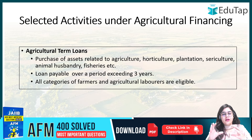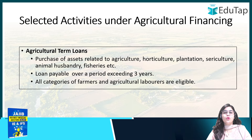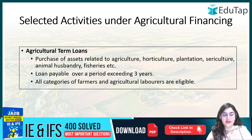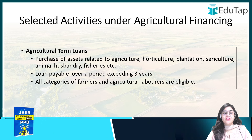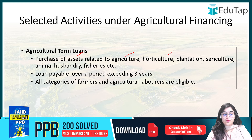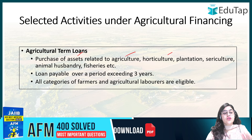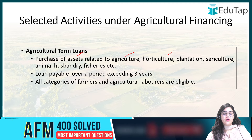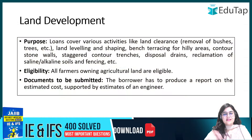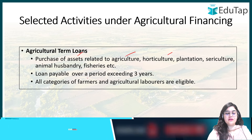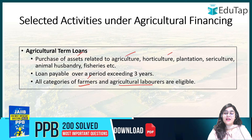Which activities are those that farmers do in agriculture, which can give them loans from banks or financial institutions? Agricultural term loans can be obtained if you have to purchase any assets for agriculture, horticulture, plantations, sericulture, animal husbandry, or fisheries. These term loans are normally repaid over a period exceeding 3 years. All categories of farmers and agricultural laborers are eligible for agricultural term loans.